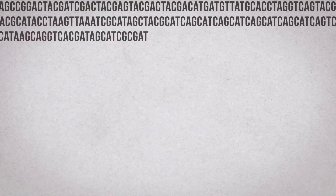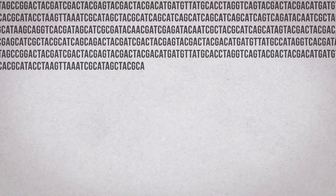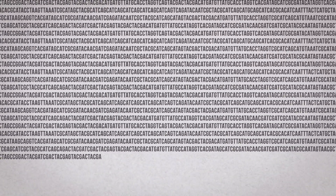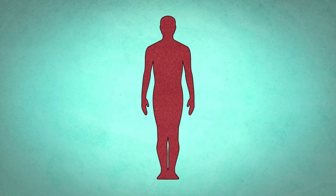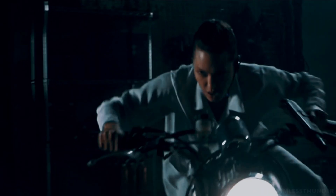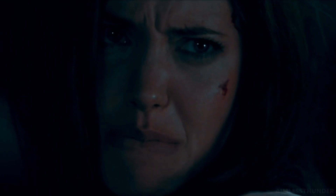Each person's genome has about 3 million single nucleotide variations as well as many other types of genetic variations. How do we predict the function of these genetic variations?